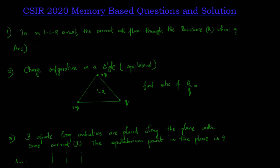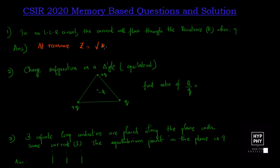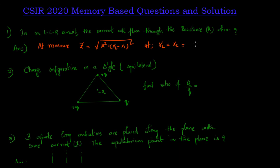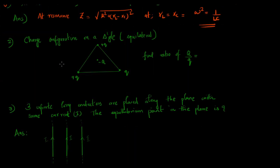The first question is about an LCR circuit: the current will flow through the resistance R. The current will only flow through the resistance at resonance. At resonance, the impedance Z equals √(R² + (X_L − X_C)²), and at resonance X_L = X_C, which gives the condition that ω² = 1/LC. So ω² = 1/LC is the correct answer for the first question.